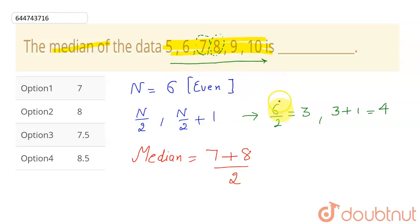This is the proper definition for median in case this n is even. So this will be equal to 15 by 2, which will be equal to 7.5.